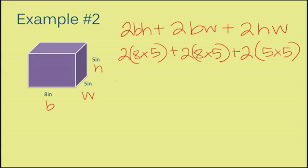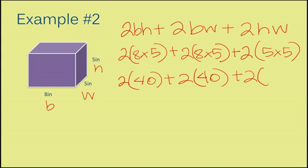So, now I'm going to multiply everything that I have inside of my parentheses and I have 2. 8 times 5 is 40, plus 2. 8 times 5 is 40 again. 2 and 5 times 5 is 25.